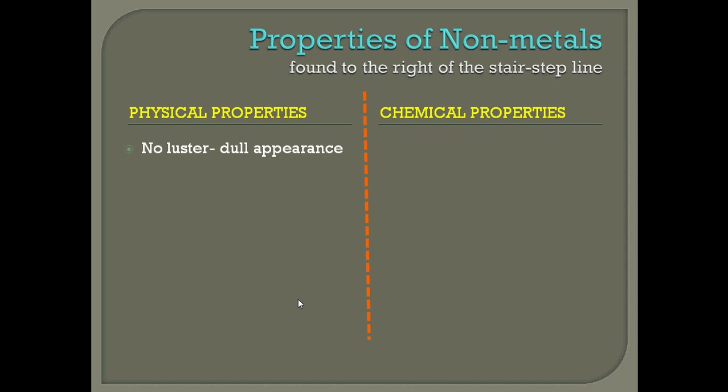Let's move on to properties of non-metals. These are found to the right of the stair-step line, and on your color-coded periodic table you should have colored these orange. You'll notice that these properties are going to be opposite to those of metals. The first physical property is that they do not have luster — they're not shiny, they have a dull appearance. They are also not going to be good conductors of heat and electricity; it will be hard for electricity or heat to flow through a non-metal.